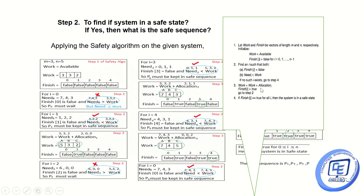When the condition is satisfied, Work is recalculated as Work plus Allocation, and Finish[i] is set to true, then we repeat step two. For P1, Work becomes 3, 3, 2 plus 2, 0, 0, giving Work equals 5, 3, 2. Finish[1] is set to true, so P1 is the first process in the safe sequence.